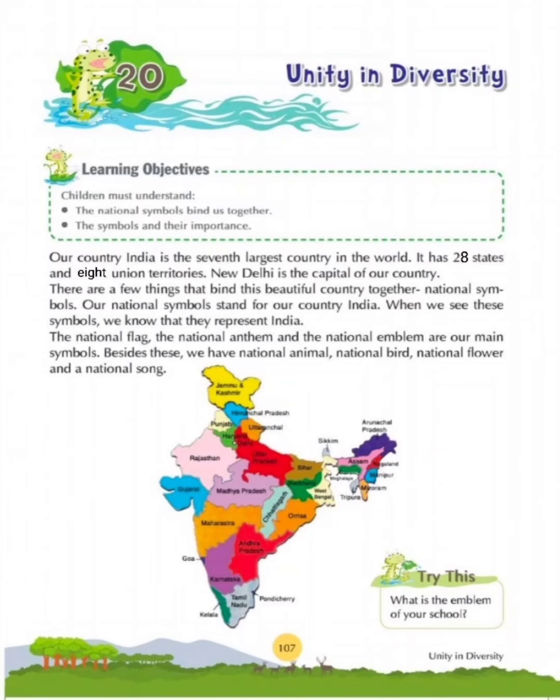There are a few things that bind this beautiful country together — national symbols. Our national symbols stand for our country India. When we see these symbols, we know that they represent India. The national flag, the national anthem, and the national emblem are our main symbols. Besides these, we have a national animal, national bird, national flower, and a national song.